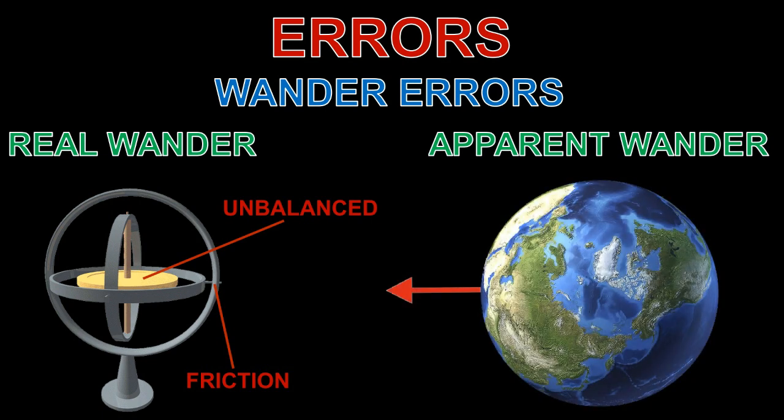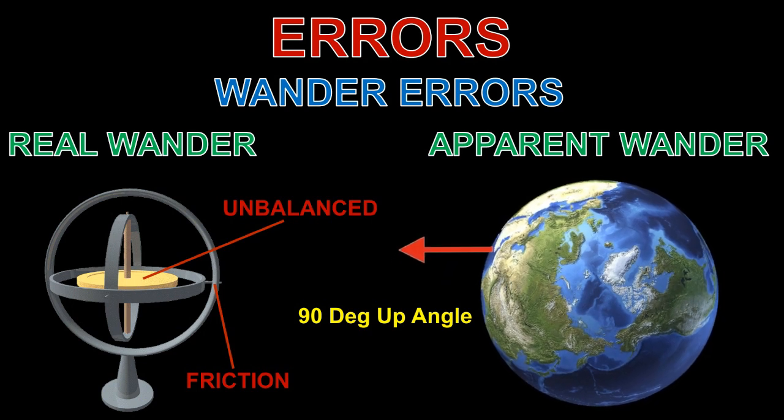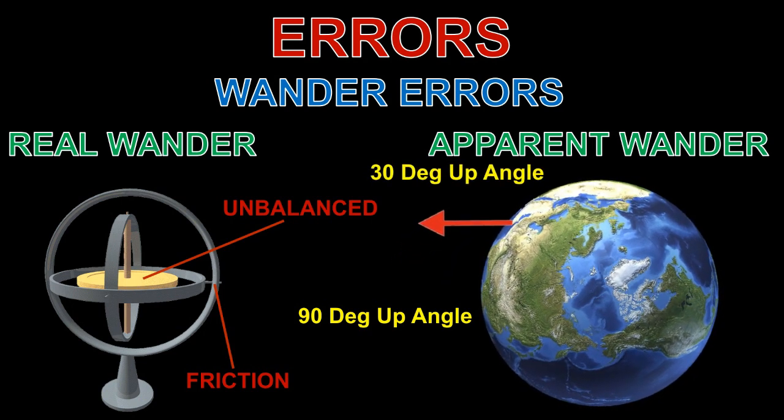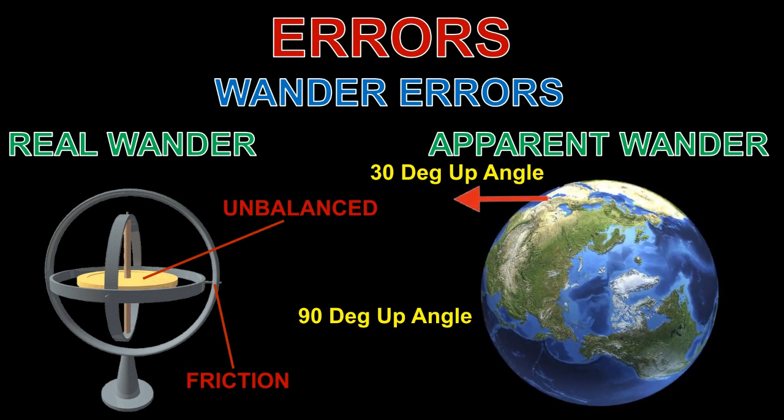Apparent wander happens because the spin axis is maintained relative to space, and not the Earth's surface. Therefore, as the Earth rotates, or the gyroscope is moved, the direction of the spin axis will appear to wander, or change slowly. Unfortunately, these errors have to be corrected periodically by the pilot.